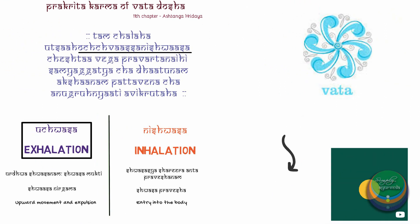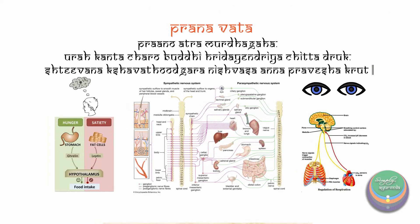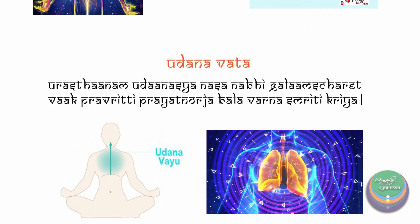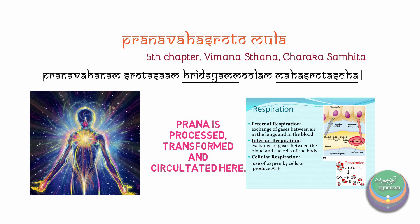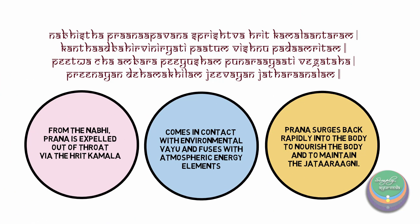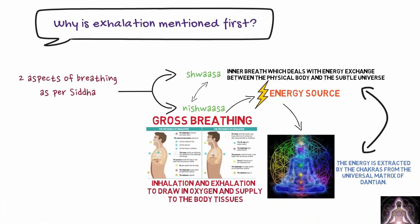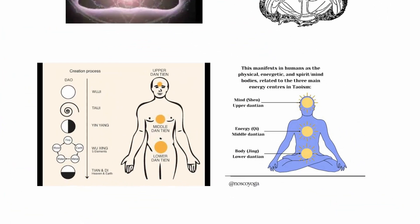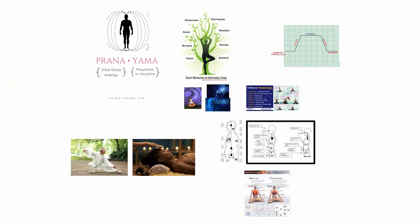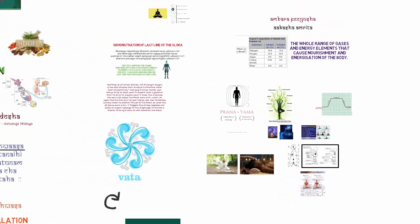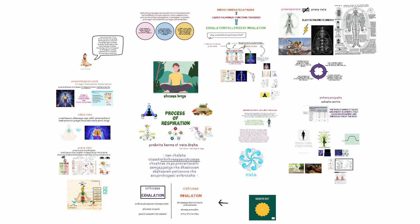Before we conclude, let us revise what we learnt in this video. We understood the importance of Vata-Dosha in the physiology of respiration and looked into how Pranavata and Udanavata are significant. We further looked into Pranavaha Srotas and how it is a site of process, transformation, and circulation of Prana in the body. We learnt the complete physiology of respiration according to Ayurveda as per Acharya Sharangdhara and understood its inner meaning by taking references from Siddha and Dantian. We also tried to affirm it using references from contemporary physiology. Later, we went through the basics of Pranayama and Dantian breathing. We will leave links for more information in the description box. Thank you for your patience.